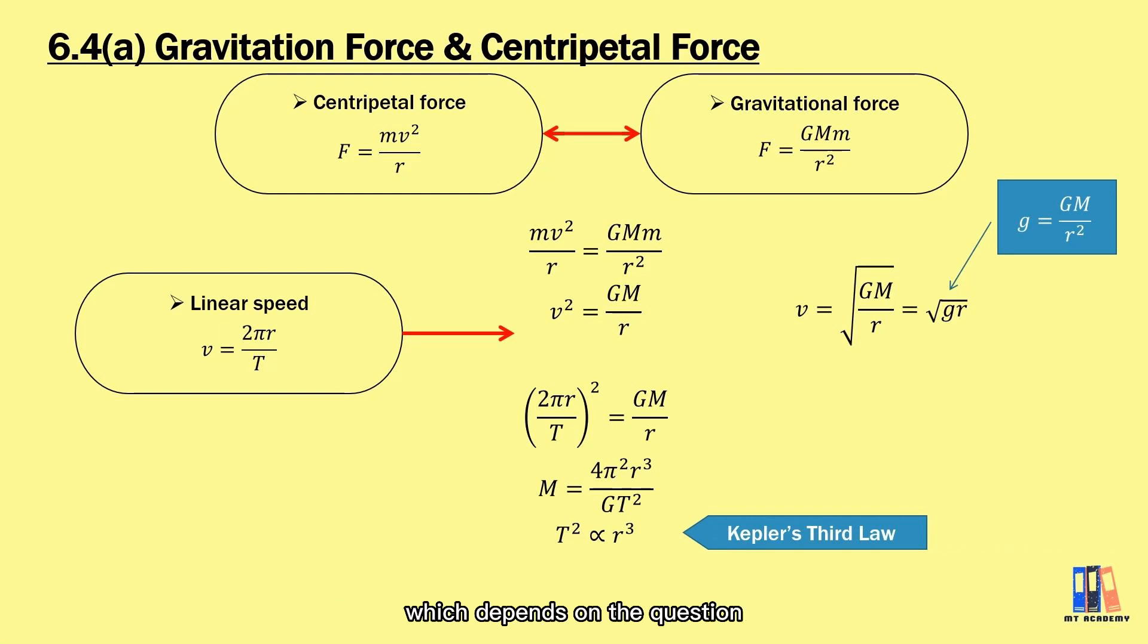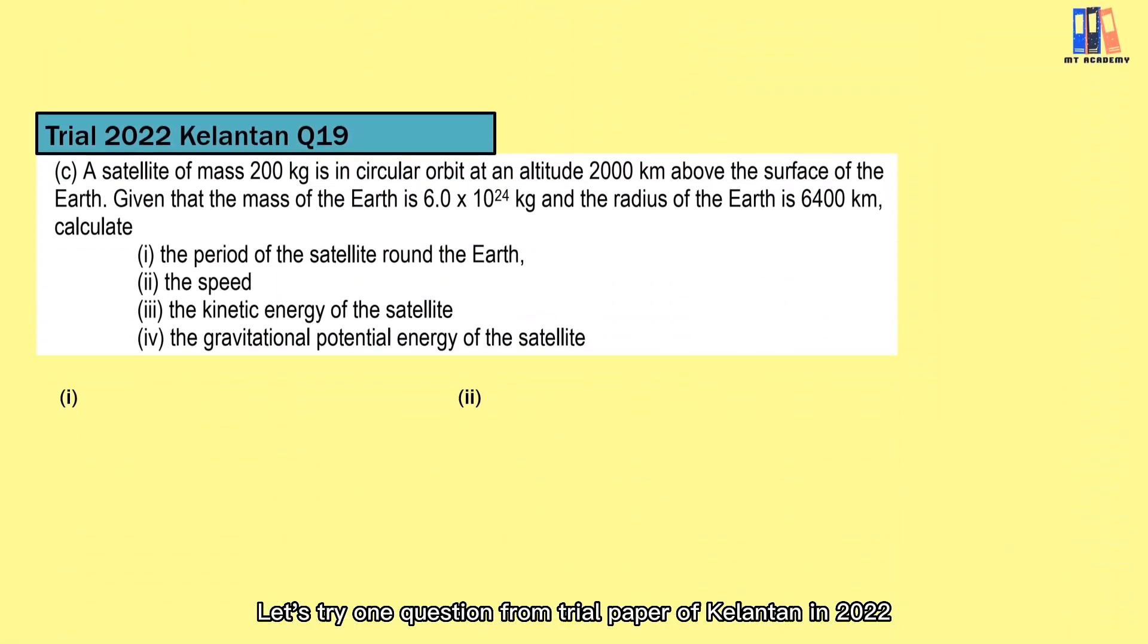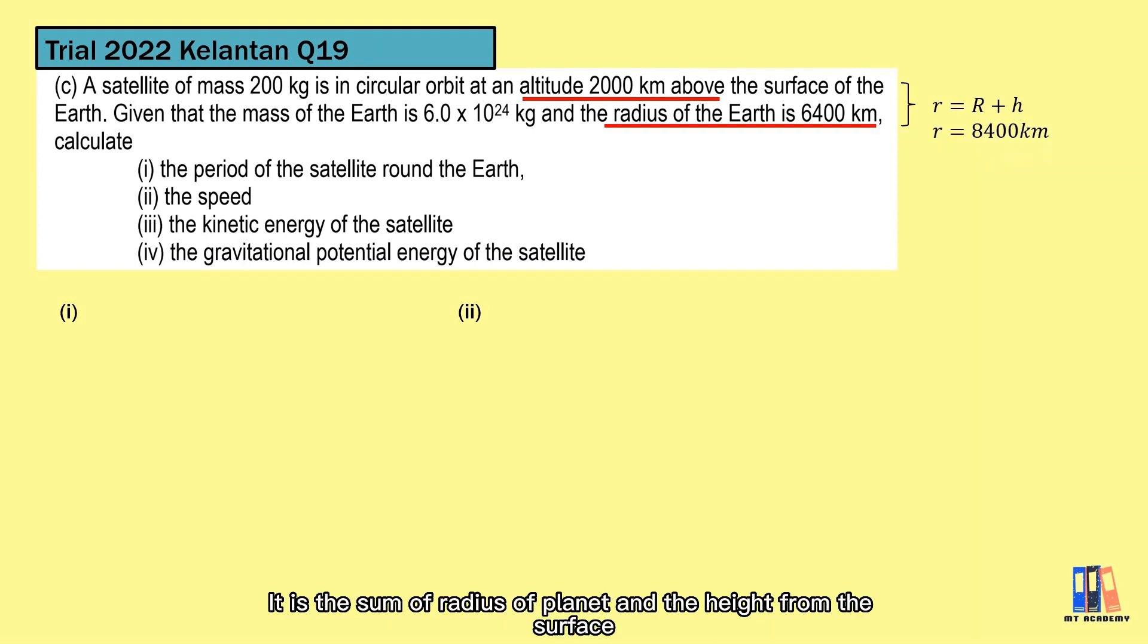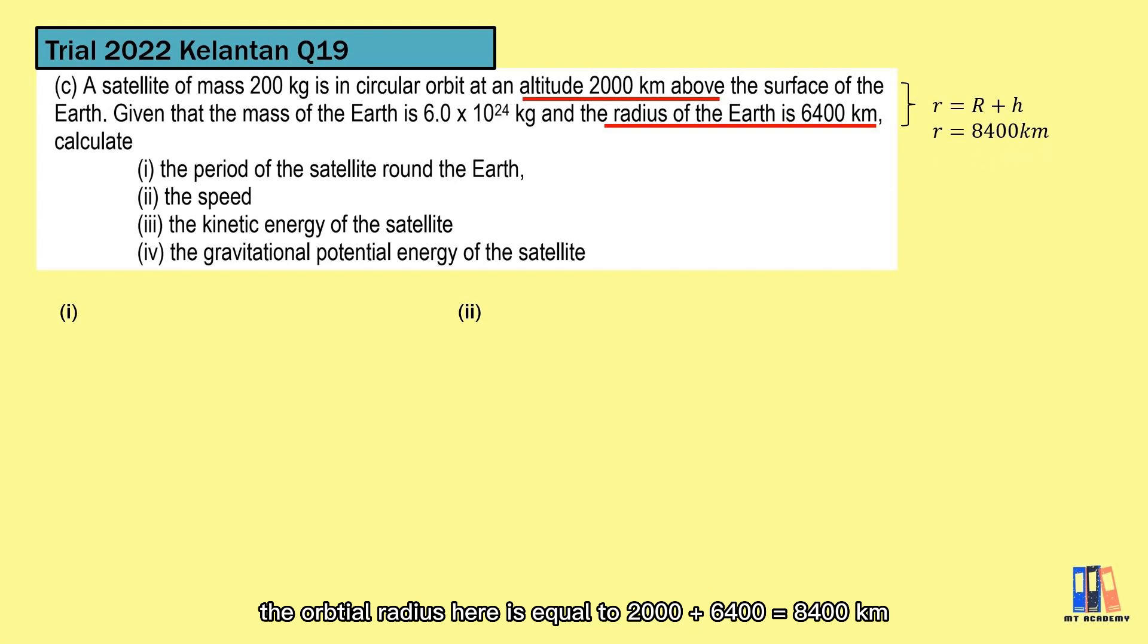Let's work one question from Triple Science in 2022. A satellite of mass 200 kg is in circular orbit at an altitude 2,000 km above the surface of the Earth. We are given with the radius of the Earth, so always remember how you get the distance, also known as the orbital radius. It is the sum of radius of the planet and the height from the surface. From the information given, the orbital radius here is equal to 2,000 plus 6,400 equal to 8,400 km.